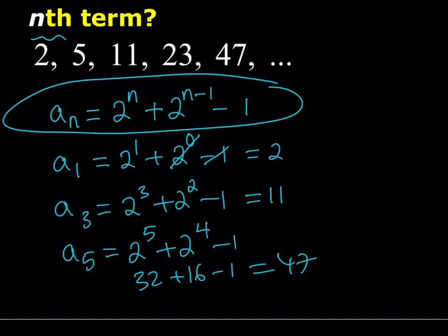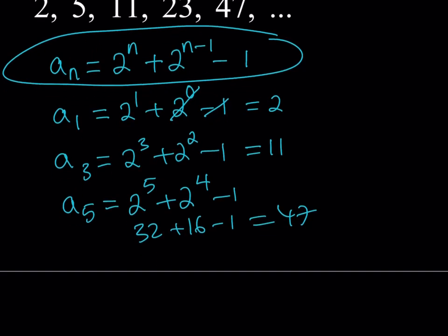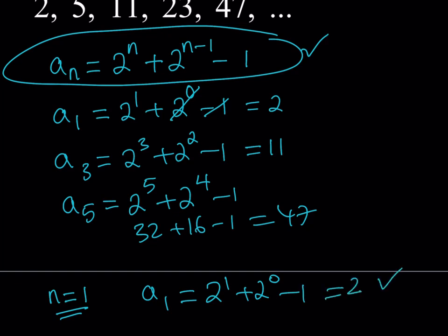How would you prove or disprove that? We're going to use mathematical induction. Here's how it works. First, we're going to see that this works for n equals 1. So that's my claim — this works for all n, which are obviously positive integers. n equals 1 gives us 2 to the first plus 2 to the power 0 minus 1, which equals 2. So n equals 1 works. This is our base case.